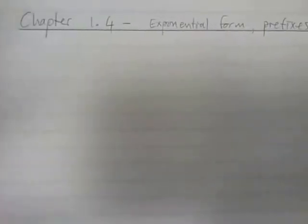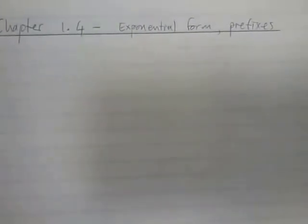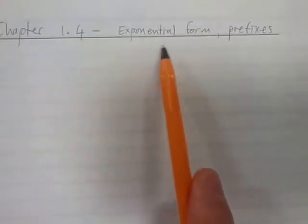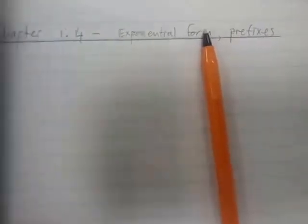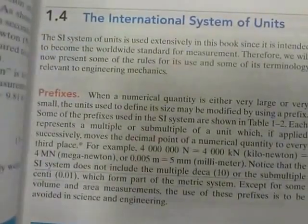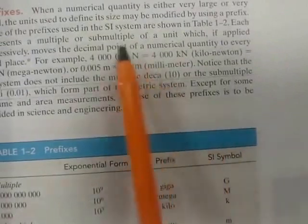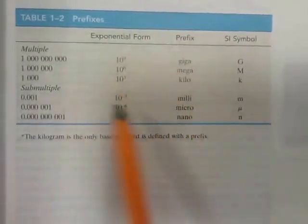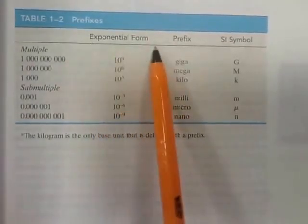Hi guys, welcome to this next video on Chapter 1 of Engineering Mechanics. We're going to go through Chapter 1.4: exponential form and prefixes. We're using the textbook by Hibbeler, Mechanics for Engineers: Statics, and we'll briefly discuss section 1.4. The important things to get here are what is a prefix and how to distinguish between exponential form and prefixes. Please study this table carefully.